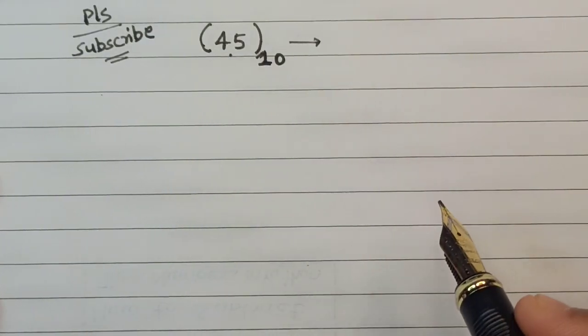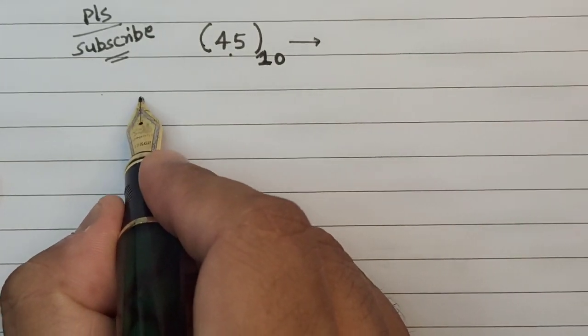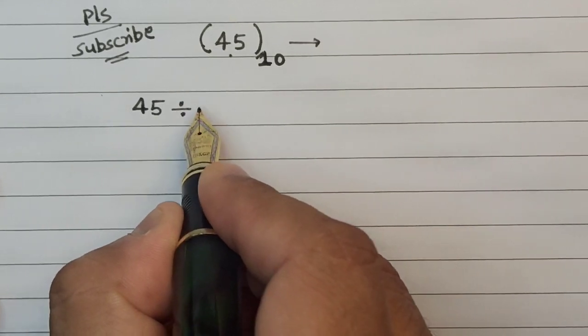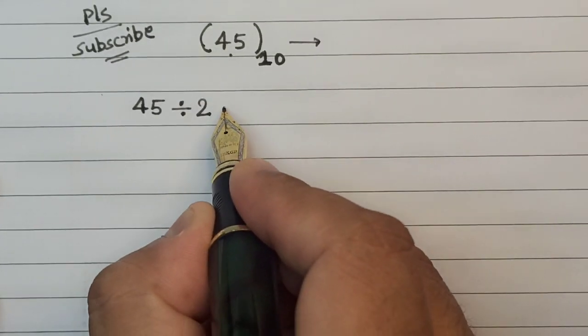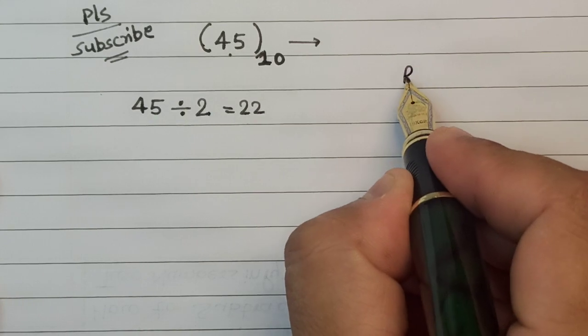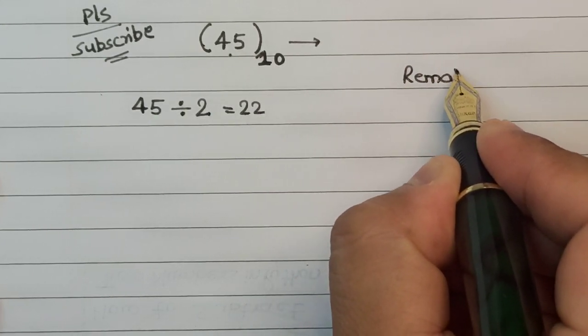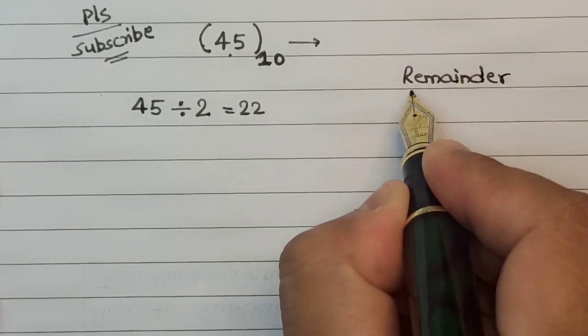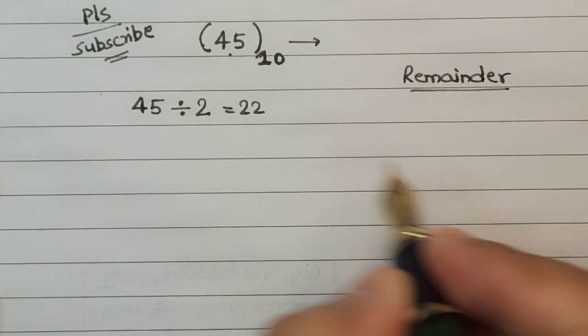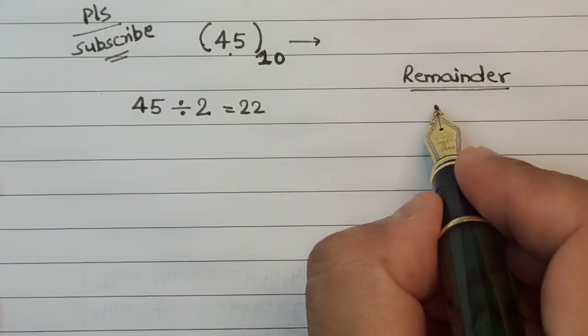So let's say we have to convert this 45. When I divide 45 by 2, I get the quotient as 22 and let me make a list of remainders on this side. The remainder that I get after dividing 45 by 2 is 1.